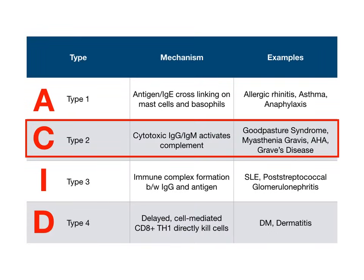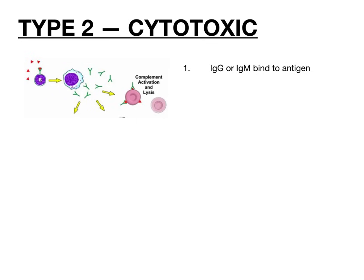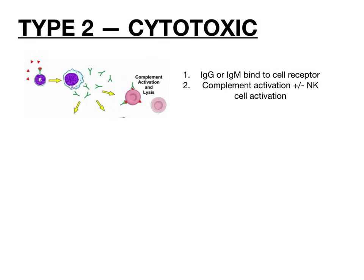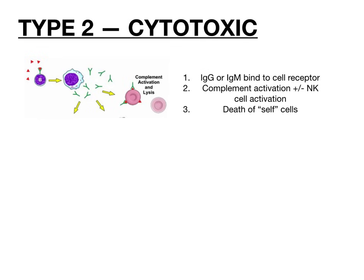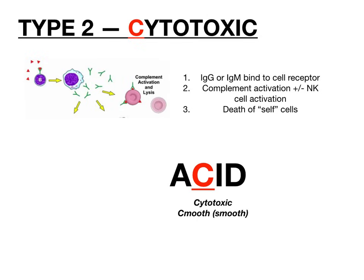Now we're going to move on to type 2. Type 2 is the C in our ACID mnemonic, and what does C stand for? Cytotoxic. What happens here is that either IgG or IgM bind to an antigen. When they bind to the antigen and to the cell receptor, you get complement activation. You can also get natural killer cell activation. The result is the death of your self-cell — so this is a type of hypersensitivity that results in the death of cells native to the human body. Type 2 is cytotoxic, and what you need to remember is that it involves IgG or IgM and that it's smooth — we're going to use the C in smooth — smooth linear antibody deposition.